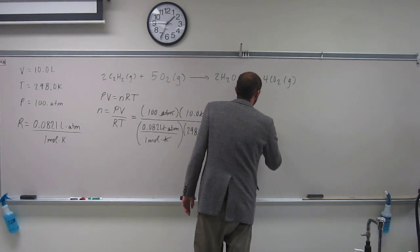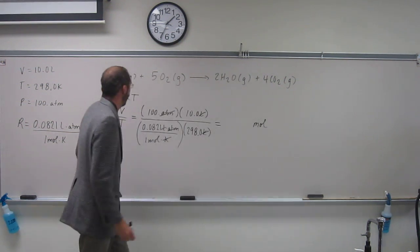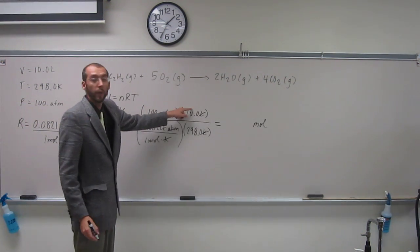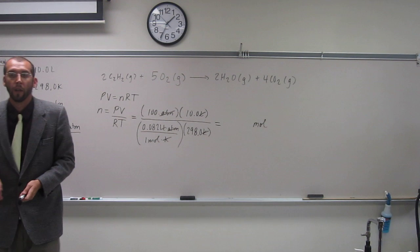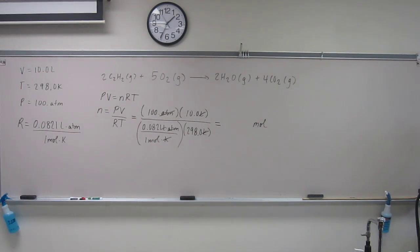Our units here is going to be moles, and it looks like it's going to be 360s. Now all we do is just plug these numbers into our calculator, and that will give us the number of moles of acetylene that we got.